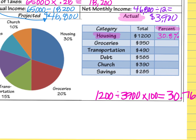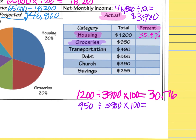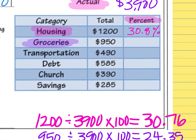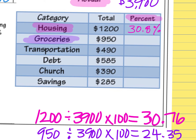The next category is groceries. To do that, I take the amount of money in groceries, which was $950, divided by $3,900 because that's my net monthly income, then times it by 100 so the answer turns into a percentage. I get 24.35, which I round up to 24.4%.